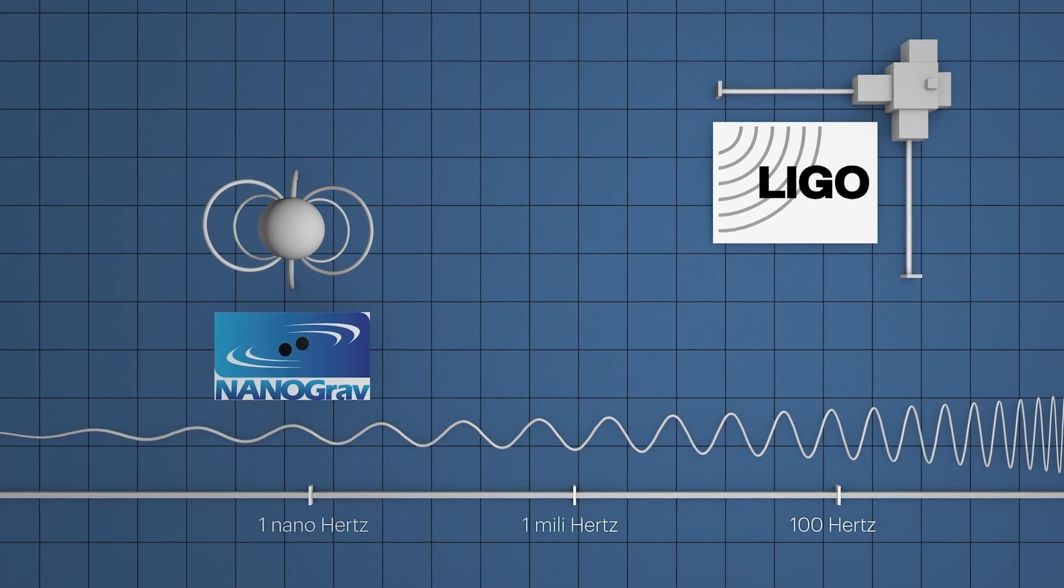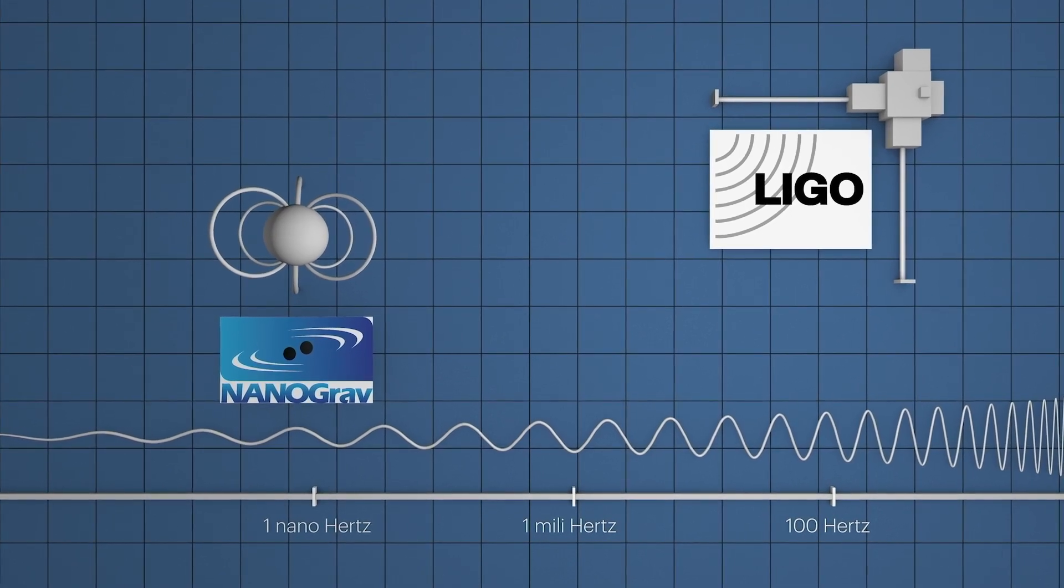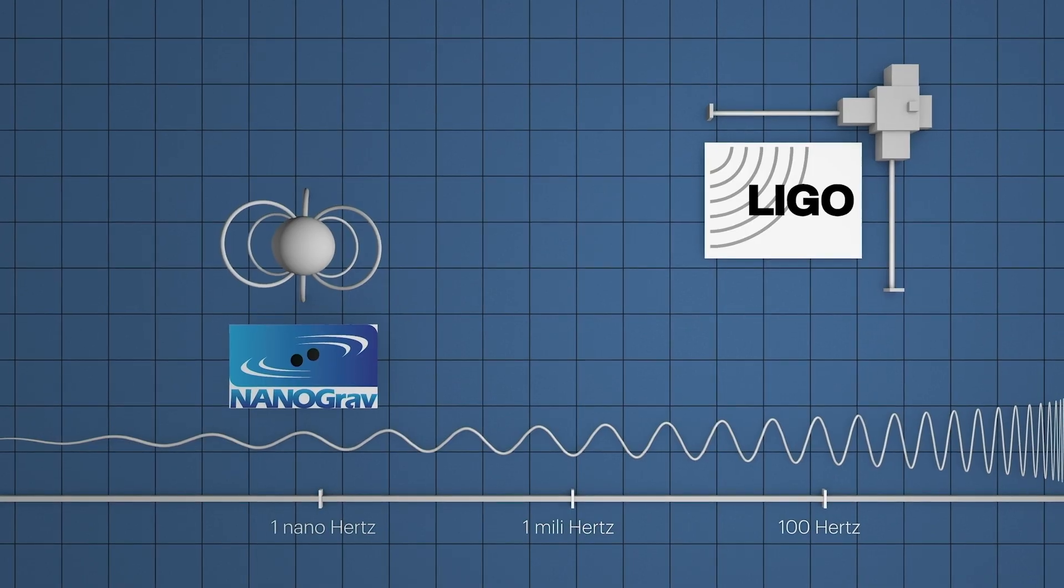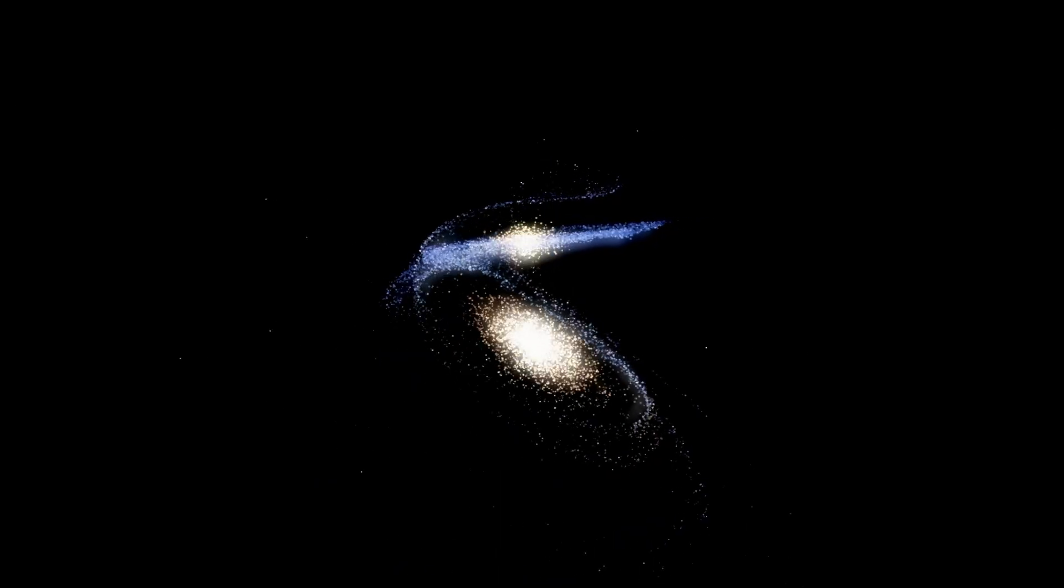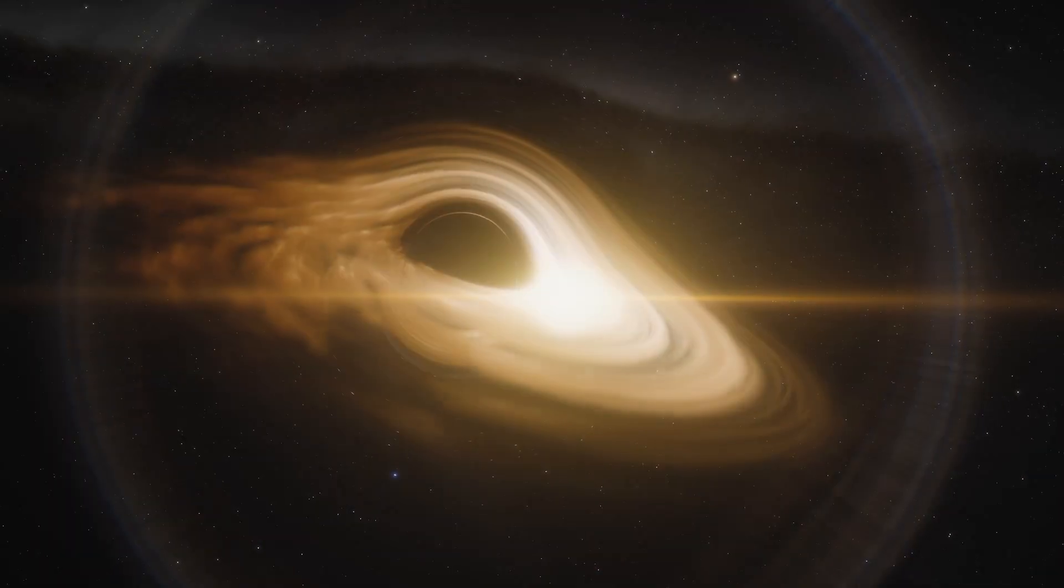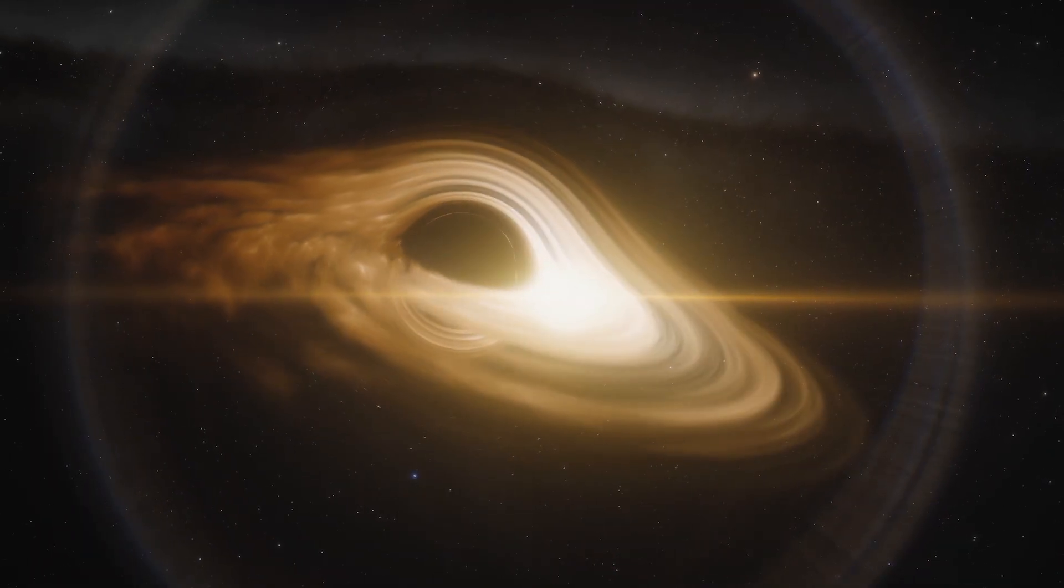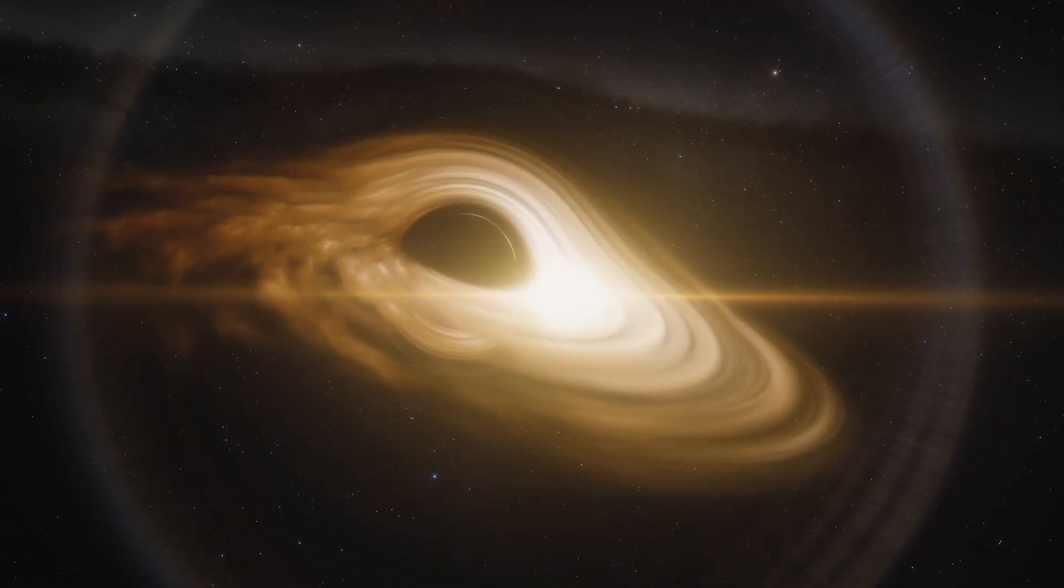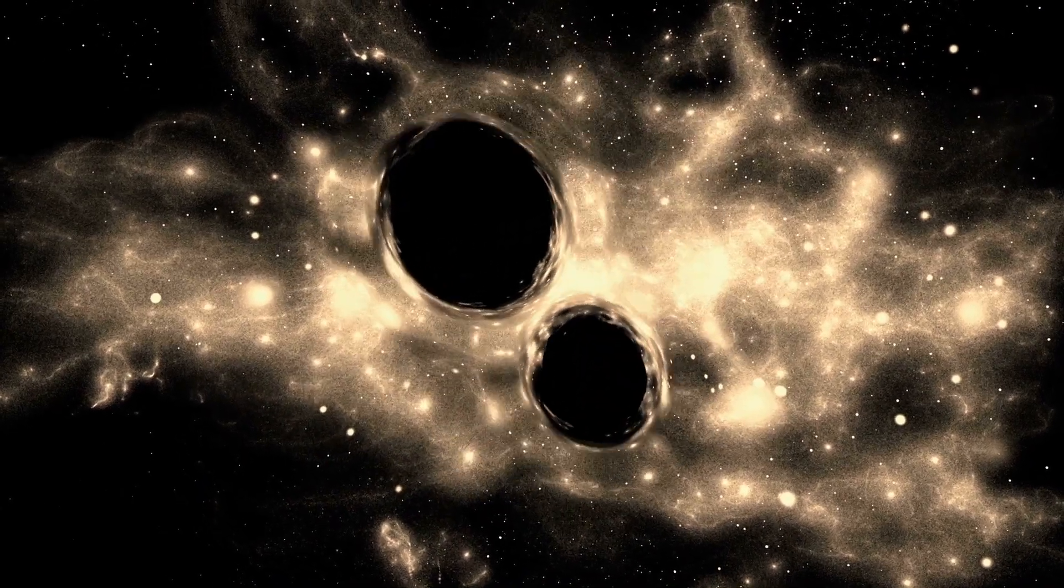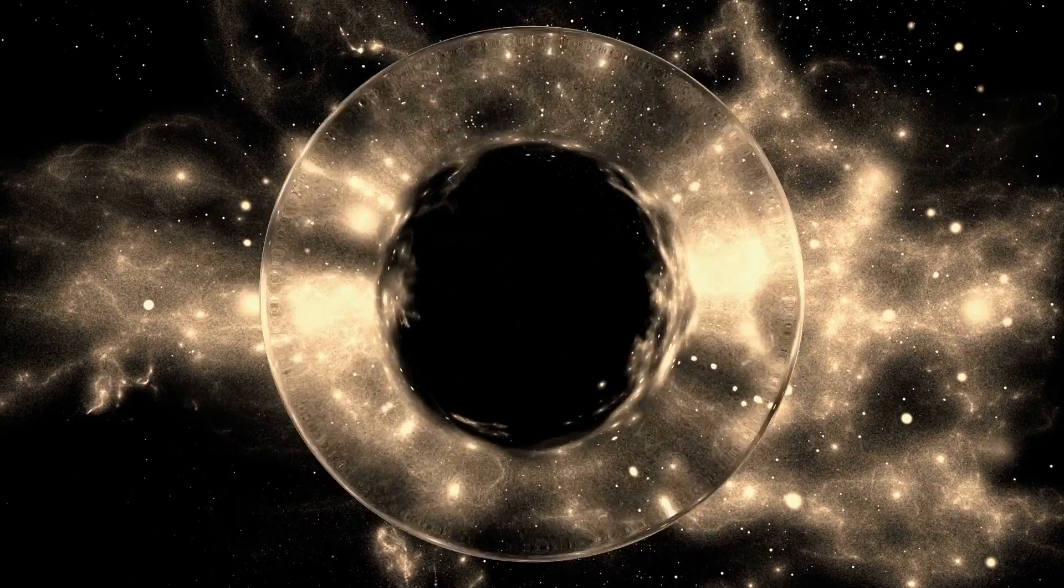Nanograv and LIGO detect gravitational waves at opposite ends of the spectrum. These sources that Nanograv detects, it's the more higher mass, so supermassive black holes. That kind of signal LIGO cannot pick up because it's in an entirely different frequency range. Nanograv allows that kind of detection. We're detecting these kind of smaller star-like black holes, these lighter ones. So we're kind of probing the two ends of the black hole spectrum.